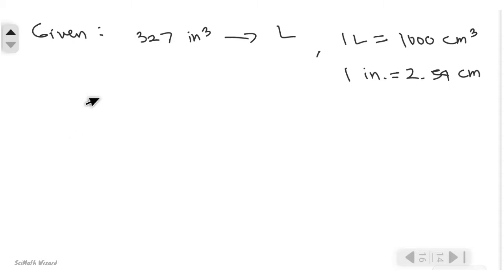First, 327 cubic inches. To cancel out the inches, we use the conversion factor: we have 1 inch in the denominator to cancel out the inches, and 2.54 centimeters in the numerator.